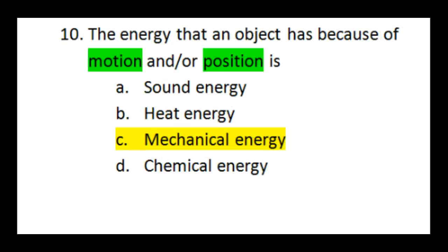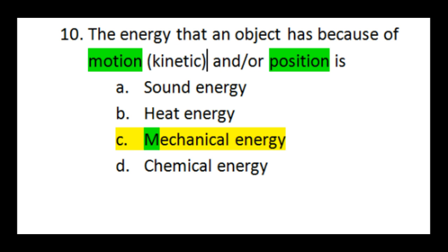Question number 10 says the energy that an object has because of motion and or position is mechanical energy. Who's the mother? Mechanical's the mother and she has two children. Do you remember who her children are? Mechanical's the mother and she has one child that's always in motion. What was the child's name that was always in motion? That's right. Kinetic. Kinetic. Her kid that's energetic.